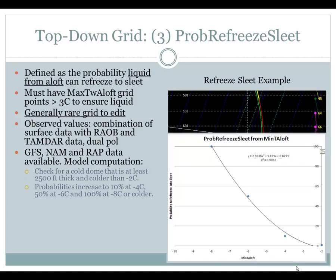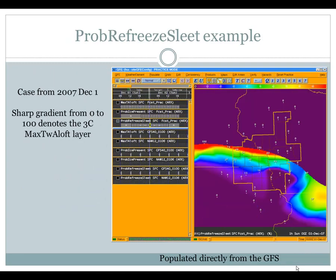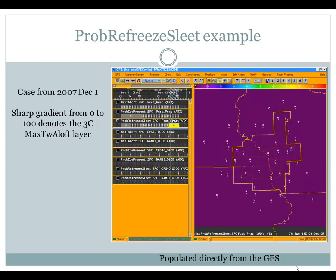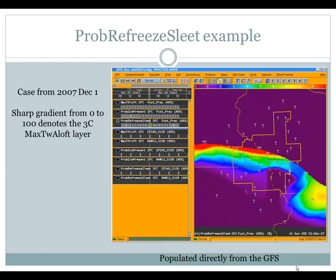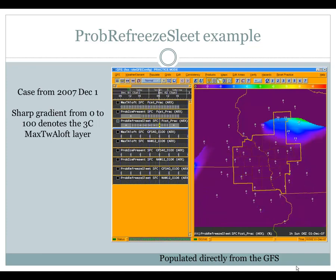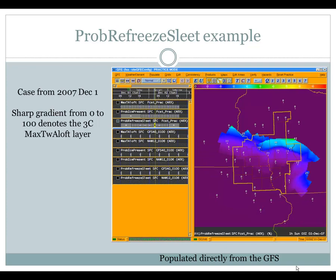Looking at that in graphical form, you steeply increase probability as you get to the minus 8 level. More details are listed in the POUT documentation. In this December 1st event, the warm nose came in and melted, but there was still plenty of shallow cold air — at least meeting the 2,500-foot threshold — deep enough to allow refreezing. At La Crosse, we switched over to sleet due to melting and then sleet due to refreezing before the dry slot came in, completely scoured out the ice, not allowing the refreeze to happen, and went over to straight rain or freezing rain.